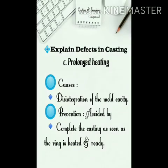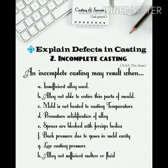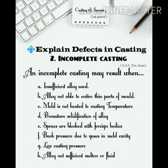C. Prolonged heating. Causes: Disintegration of the mold cavity. Prevention: Complete the casting as soon as the ring is heated and ready. 2. Incomplete casting — an incomplete casting may result when: A. Insufficient alloy used. B. Alloy not able to enter thin parts of mold. C. Mold is not heated to casting temperature. D. Premature solidification of alloy. E. Sprues are blocked with foreign bodies. F. Back pressure due to gases in mold cavity. G. Low casting pressure.